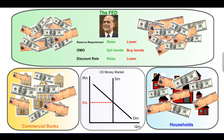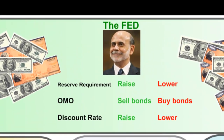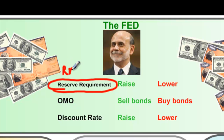Now let's talk about the different tools that the Federal Reserve, or any central bank, has for either increasing or decreasing the supply of money. We'll start with the reserve requirement, also known as the required reserve ratio, or RRR. This is defined as the percentage of a bank's total deposits from households that must be kept on reserve at the Federal Reserve Bank.